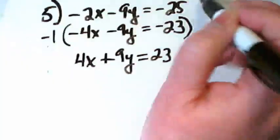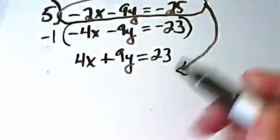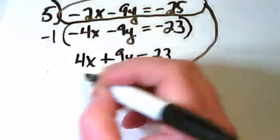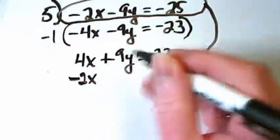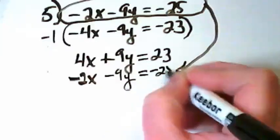And then I'm going to take the first equation and rewrite it underneath this just so I can have them all together lined up. Negative 2x minus 9y equals negative 25.